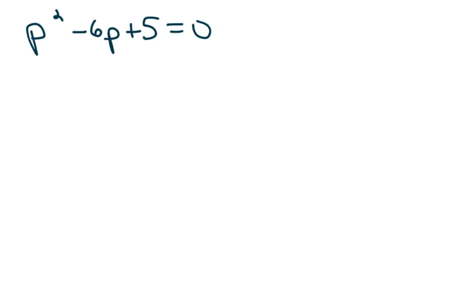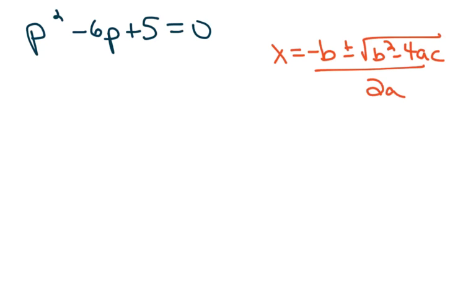Another way to solve this is the quadratic formula: the opposite of b, plus or minus the square root of b squared minus 4ac, all over 2a. Normally, we don't use the quadratic formula for solving quadratics whose solutions are real or rational — we usually use it to find solutions that are imaginary or irrational. But for the purposes of reviewing the quadratic formula, I'm going to do this easy problem here.